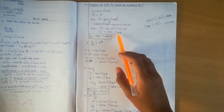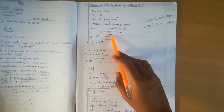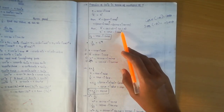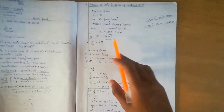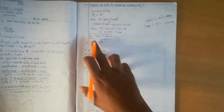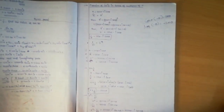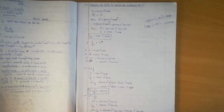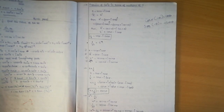So cos of minus theta is cos theta, plus i sin of minus theta is minus sin theta. Therefore 1 by x raised to n equals cos theta minus i sin theta. And x raised to n equals cos theta plus i sin theta.